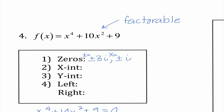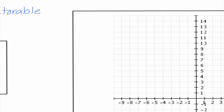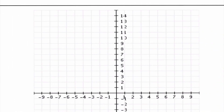This would have been awful to try using synthetic division on because nothing would have worked — that's why we need to know how to factor. Our zeros are plus or minus 3i and plus or minus i. We have no x-intercepts, so I'm going to say none. Our y-intercept is 0, 9. Since this is x to the 4th, remember it's even and positive, which tells us it's going up in both directions. If you drew a U shape or a W shape, as long as it was crossing at 9 going up in both directions, that'd be fine.